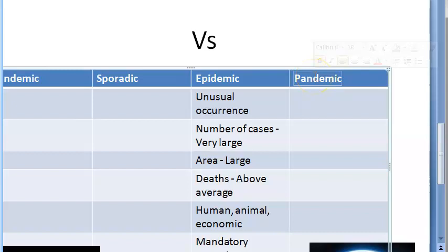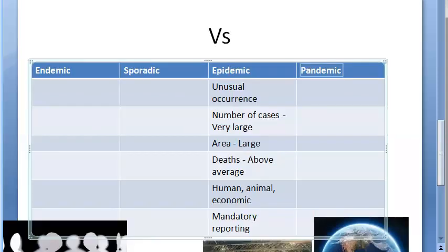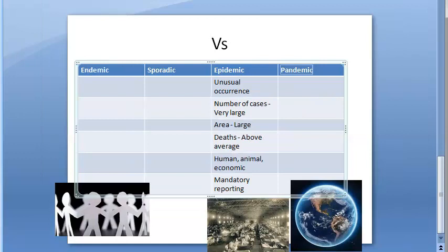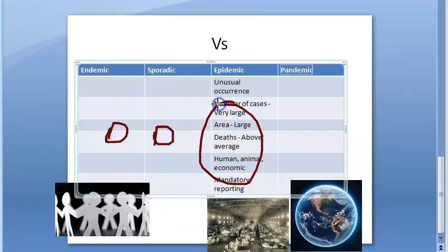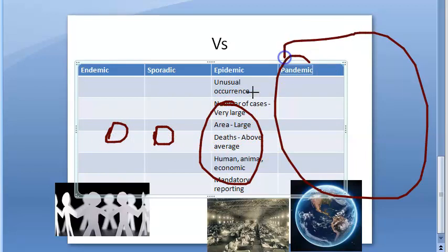There is a large geographical location involved in a pandemic, and there is temporal clustering. So to summarize: endemic and sporadic involve small areas, epidemic involves a large area, and pandemic involves an even larger area.